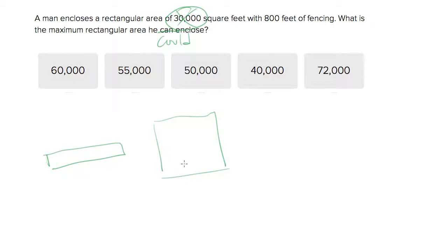If you're not sure about that, you can always test it out by plugging in for different rectangles. But basically the more and more you become square-like, the bigger your area becomes. So let's actually take that 800 feet and let's enclose a square with it.